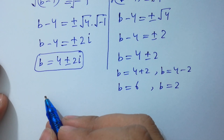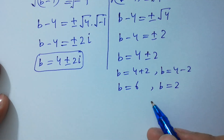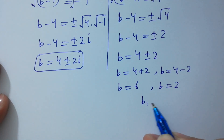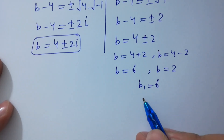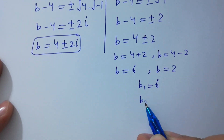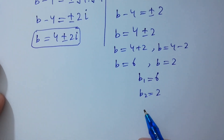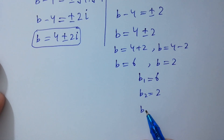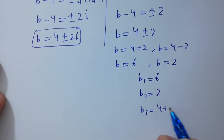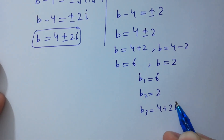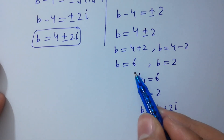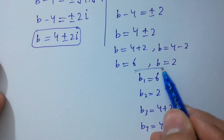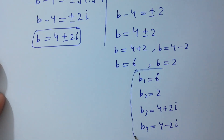So the four solutions are: b₁ = 6, b₂ = 2, b₃ = 4+2i, and b₄ = 4-2i. So it has four solutions.